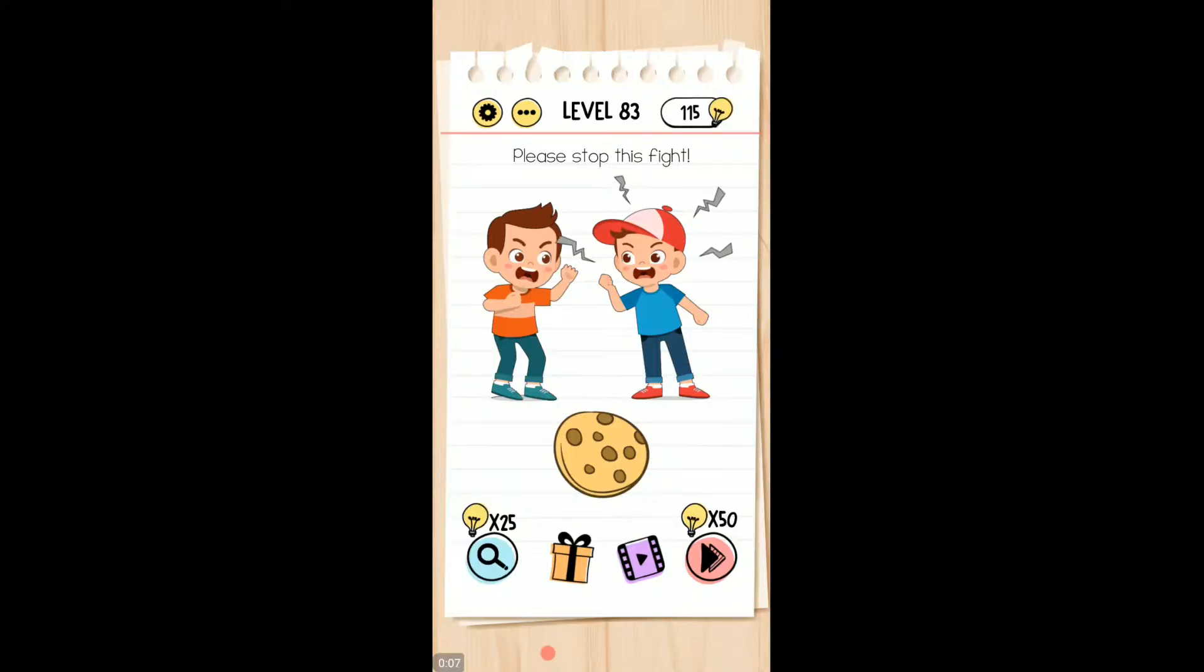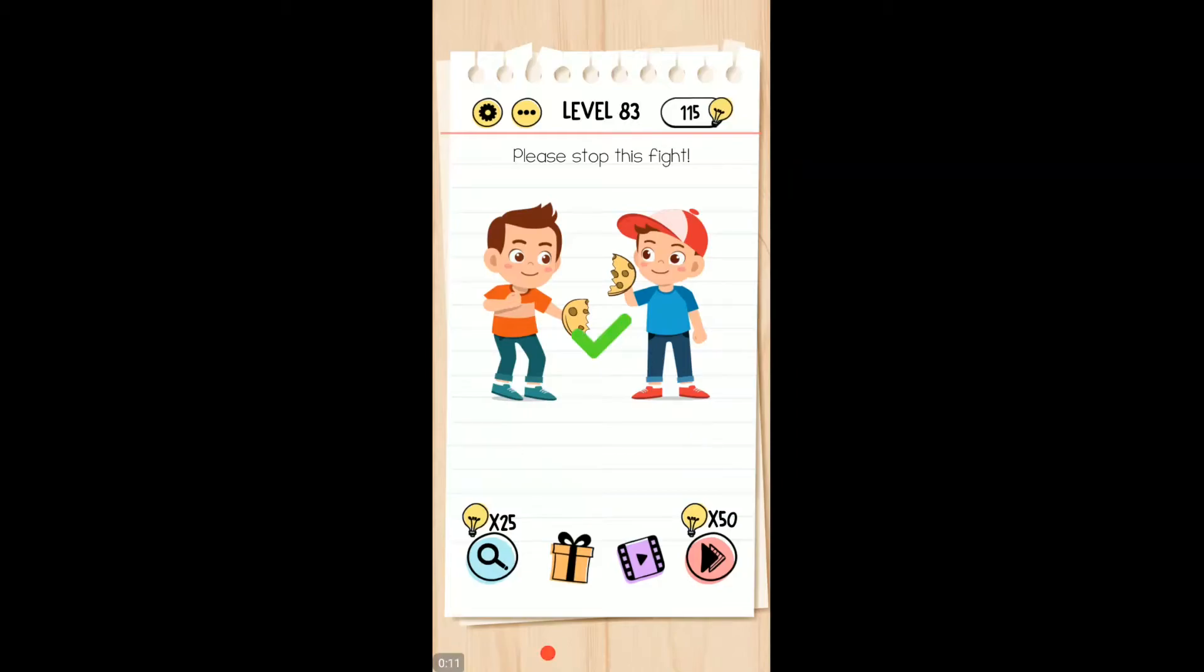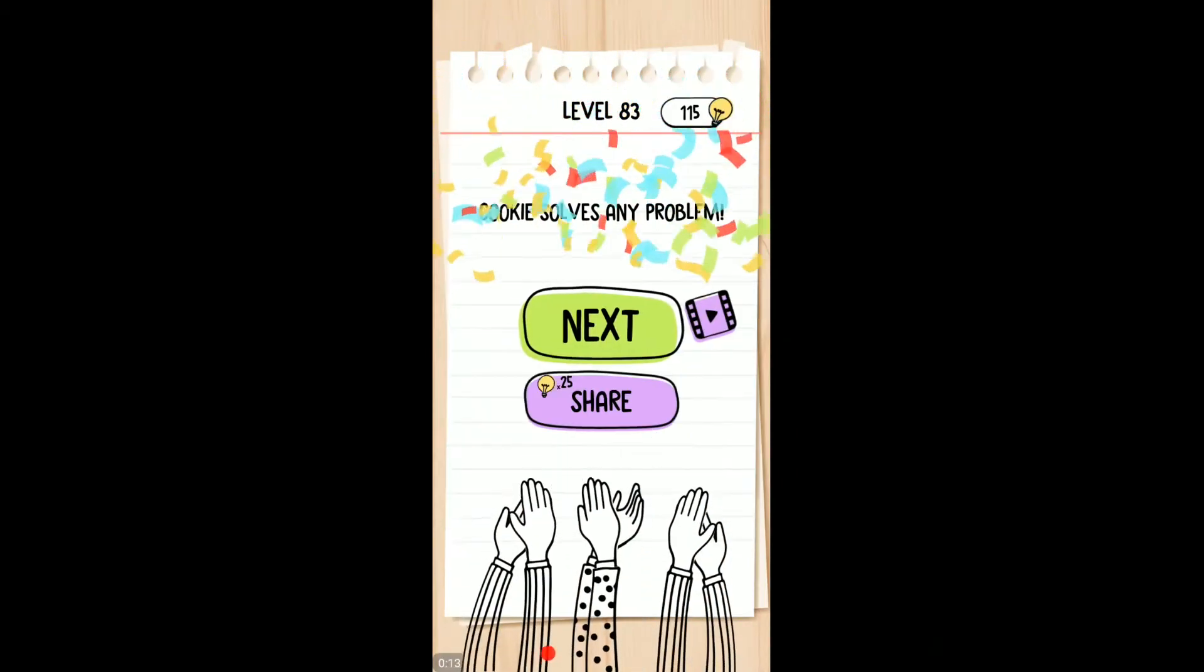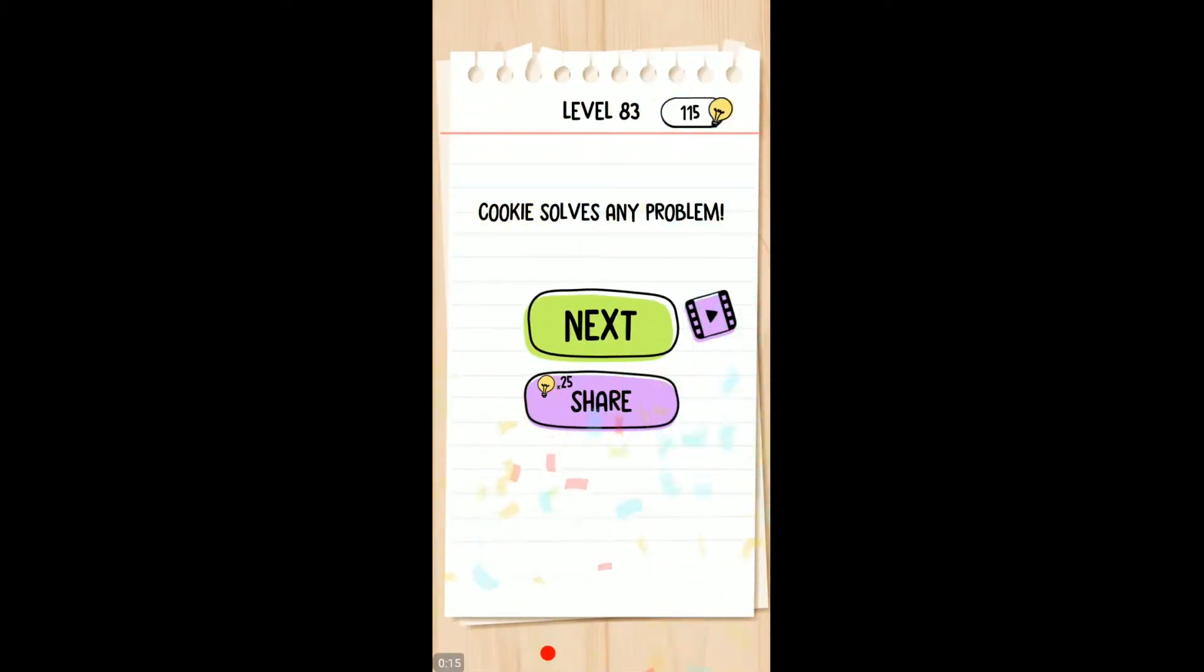Please stop this fight. Why are they fighting? It must be over a cookie. So let's put one finger on one half of the cookie, one finger on the other, and pull the cookie apart, and then you can hand them each a piece of cookie.